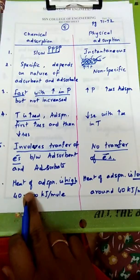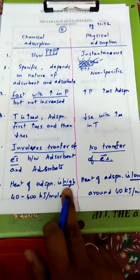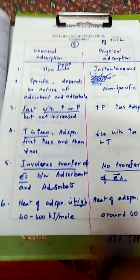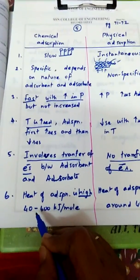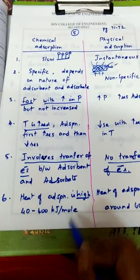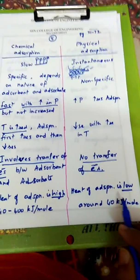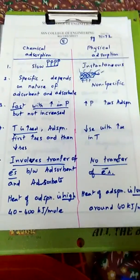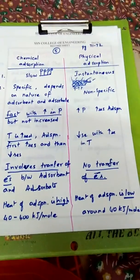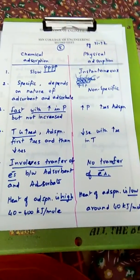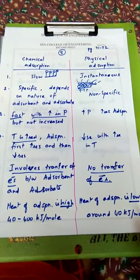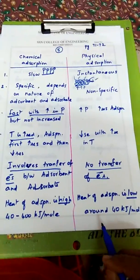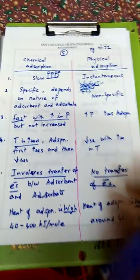The sixth point is heat of adsorption. In chemical adsorption, the heat of adsorption is high — the heat energy change accompanied by chemical adsorption is of the order of 40 to 400 kilojoules per mole. Whereas in physical adsorption, the heat of adsorption is very low because no bond is formed; molecules are adsorbed only by Van der Waals forces. Less energy is utilized, so the change in heat content is around 40 kilojoules per mole.